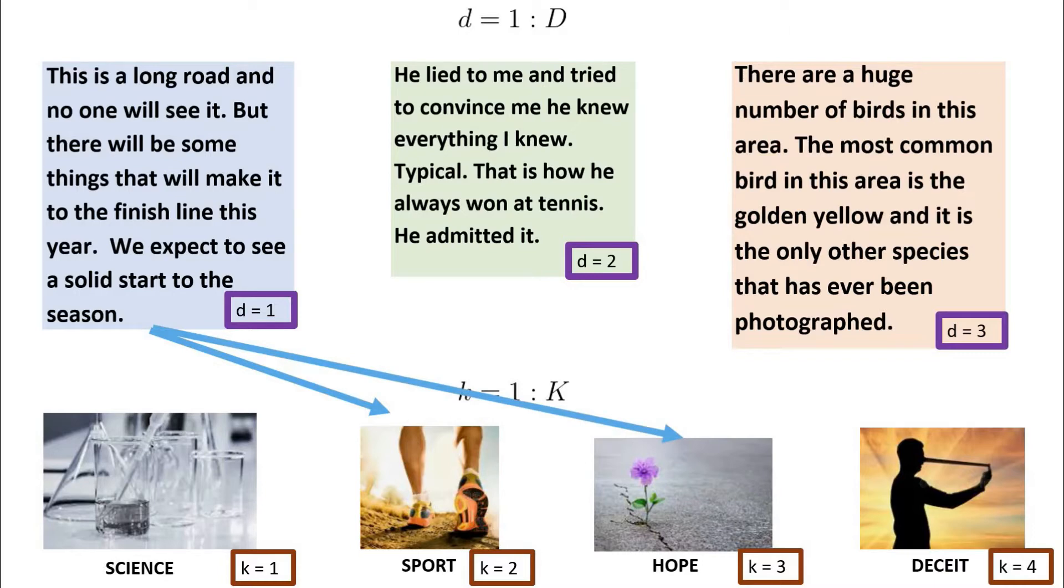Moving on to document 2, here it mentions tennis and lying, so we'd hope to assign the topics of sport and deceit in this case.